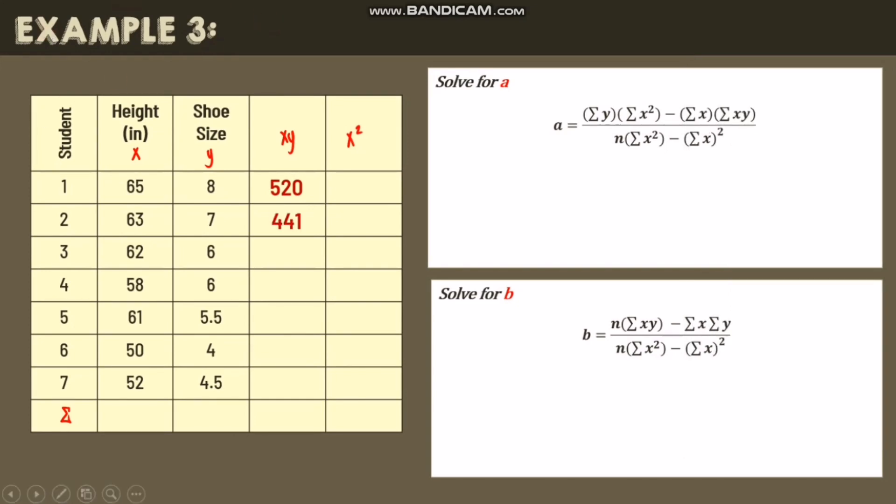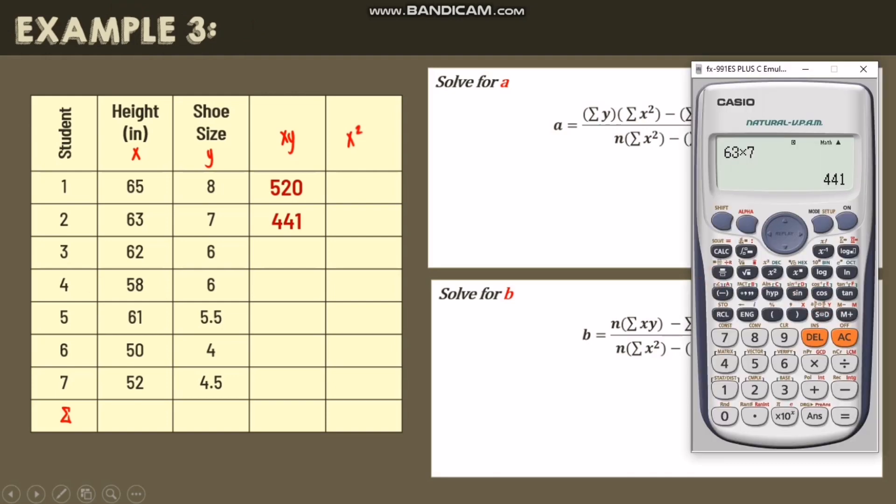Next we have 63 times 7, so we have 441. Next we have 62 times 6, so we have 372. Next, we have 58 times 6, we have 348.